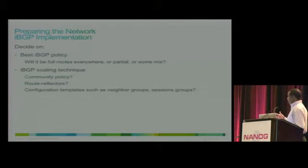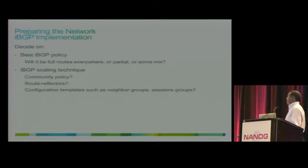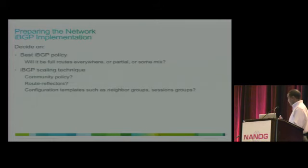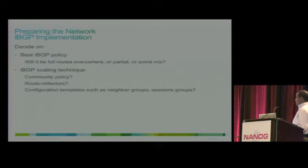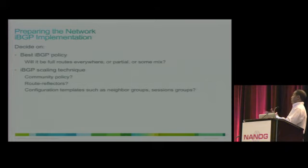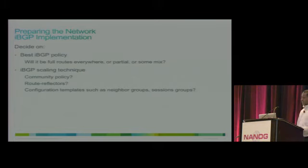Now you have to decide on policy: do you want the full internet table everywhere, or partial somewhere and full somewhere, or no IBGP in some places and full IBGP in others? Depending on your circumstance, you'll decide. You have to implement communities for scaling, and if your network is large or growing, implement route reflectors. Configuration templates are always important — they make it easier to scale and keep your system stable.